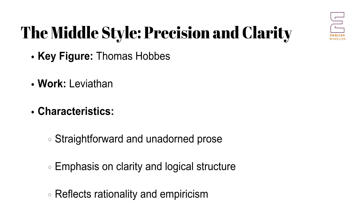Contrasting the ornate prose is the middle style, which is marked by precision and clarity. Thomas Hobbes, in his seminal work Leviathan, exemplifies this approach. Hobbes' prose is straightforward and unadorned, focusing on clarity of thought and argumentation rather than on decorative language.